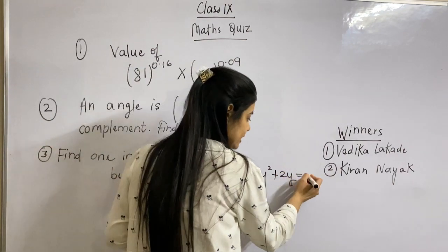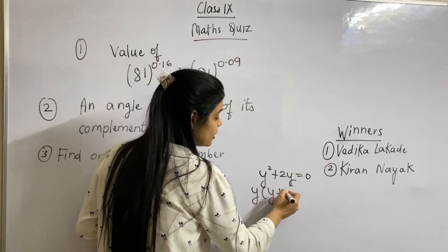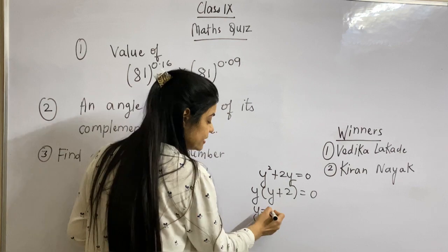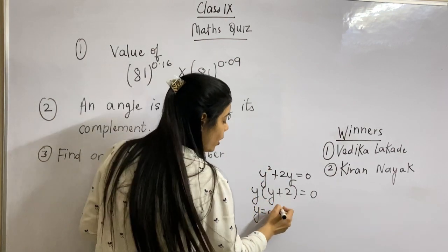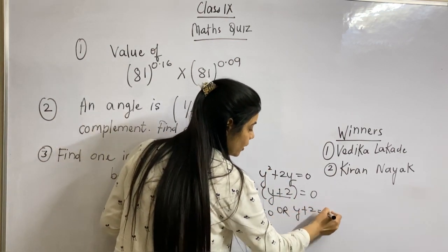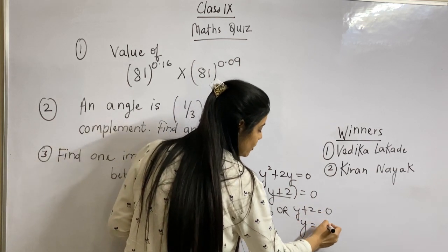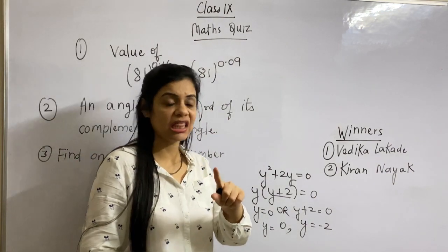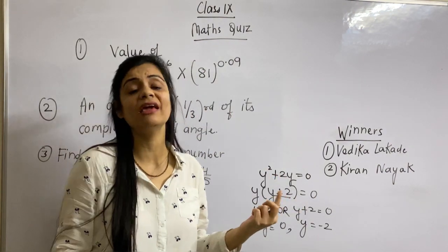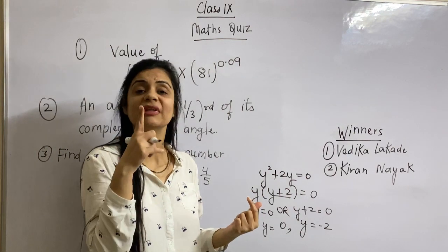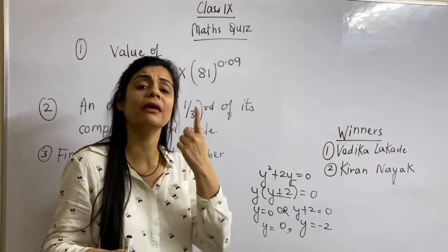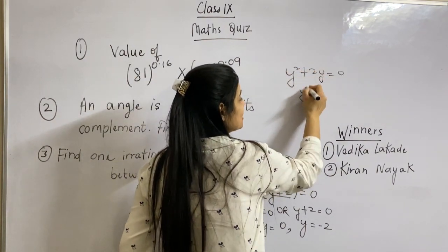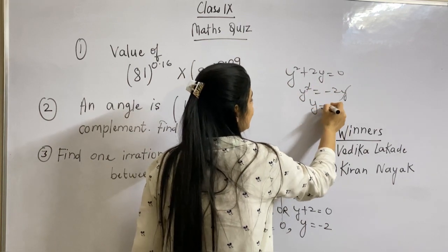So we will have 0 equal to this, like y into y plus 2 equals 0. If y is 0, either y equals 0 or y plus 2 equals 0. And y will equal minus 2. Here y equals 0. So two answers. You have to remember that this is a quadratic polynomial because the degree is 2, so there are 2 answers.